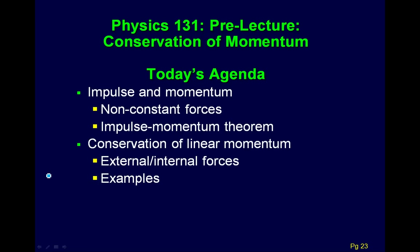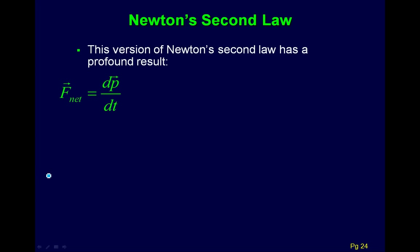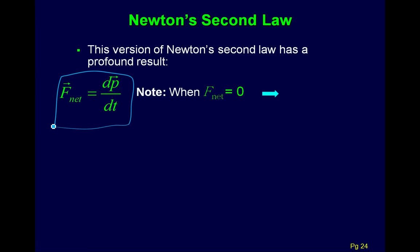Today we're going to look at the conservation of linear momentum. We left off last time talking about conservation of linear momentum, and we got this idea from Newton's second law — the original way Newton wrote it. F_net equals the first derivative of momentum with respect to time. When F_net equals zero, this implies the first derivative of momentum with respect to time is zero, which implies momentum must be constant, and therefore it's conserved.